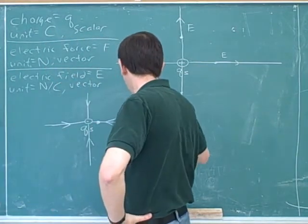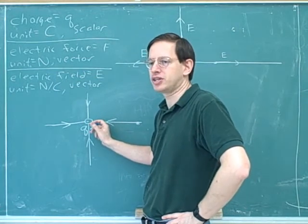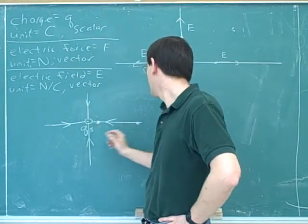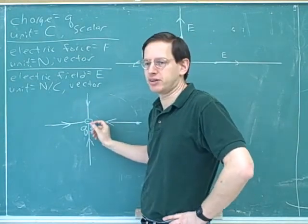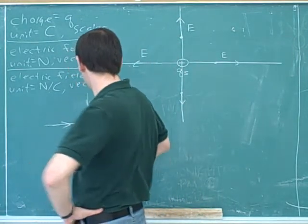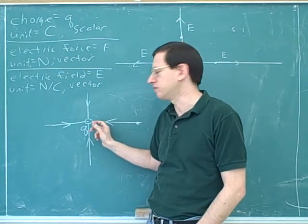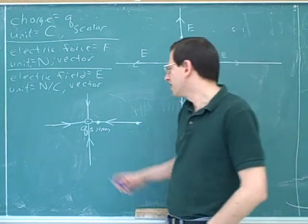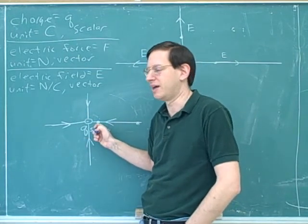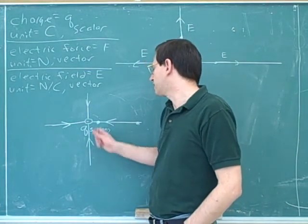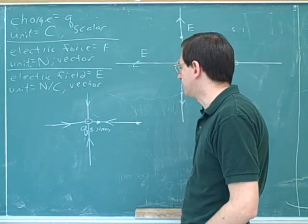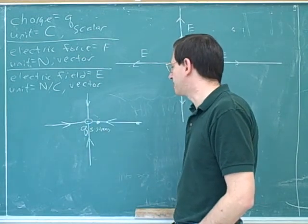Let's compare the electric field lines at two different points. At this point closer to the source charge, the electric field lines are relatively close to each other — you only go a short distance to reach the next field line. Whereas at a farther point, getting to the next field line requires a bigger arc. Where the electric field lines are close together, that indicates a strong electric field. This makes sense because the closer you are to the source of the electric field, the stronger the electric field — and that's confirmed by the field lines being closer to each other.